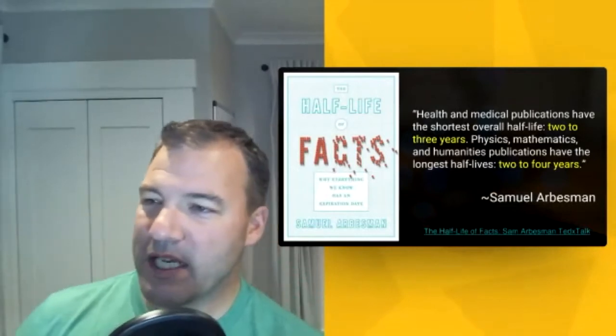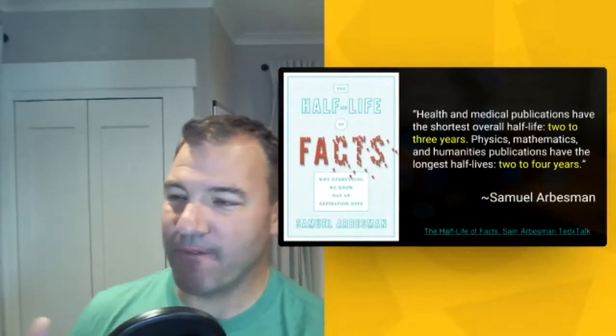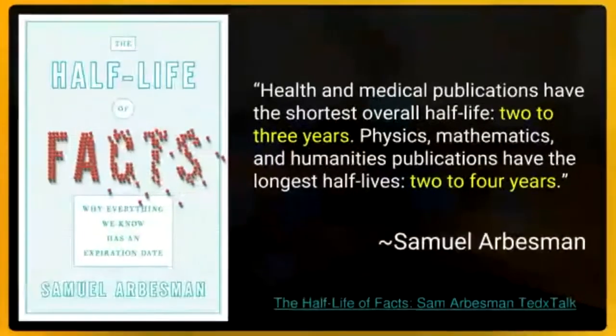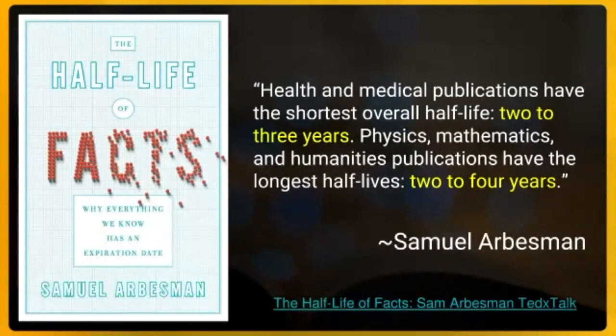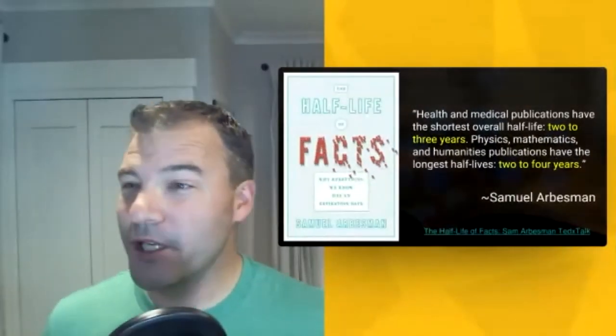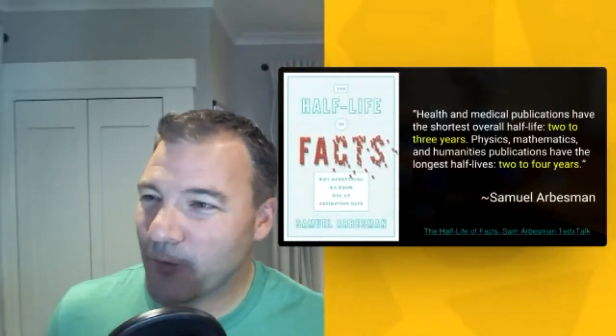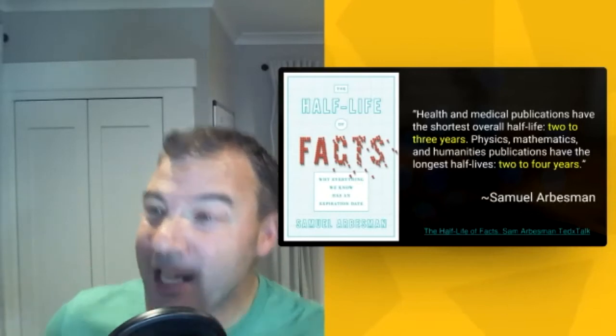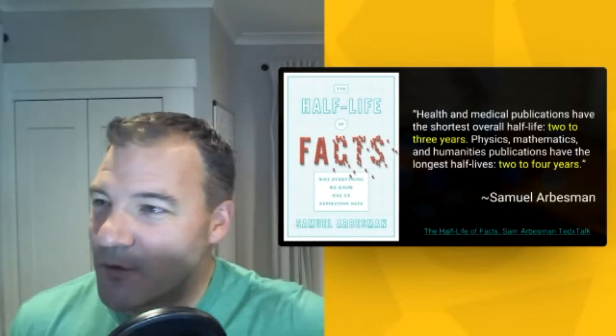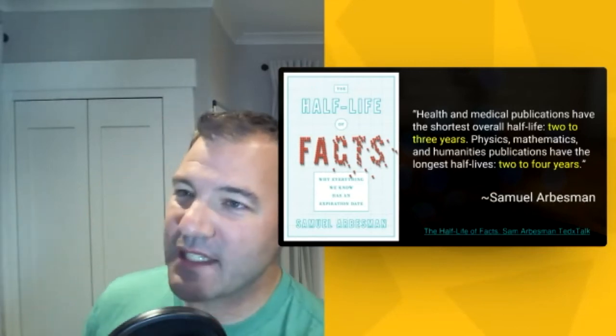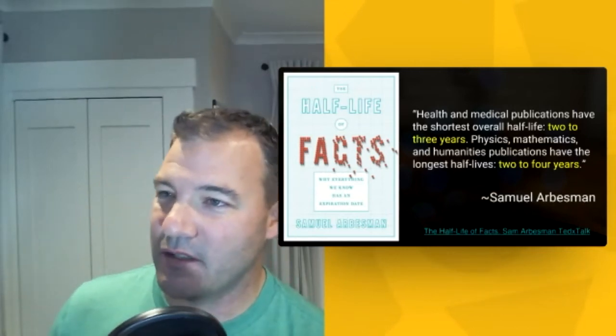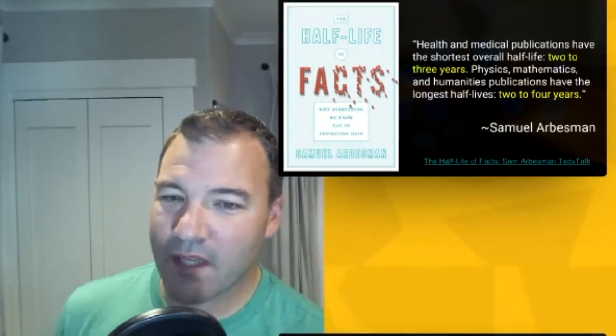In 2020, a book came out called The Half-Life of Facts. In the book, Samuel talks about just how fast information is moving today. Health and medical publications—science—is two to three years. Physics, math, and humanities publications have a half-life of at most four years. If you're using a textbook that's more than four years old, you'd be better using the internet.